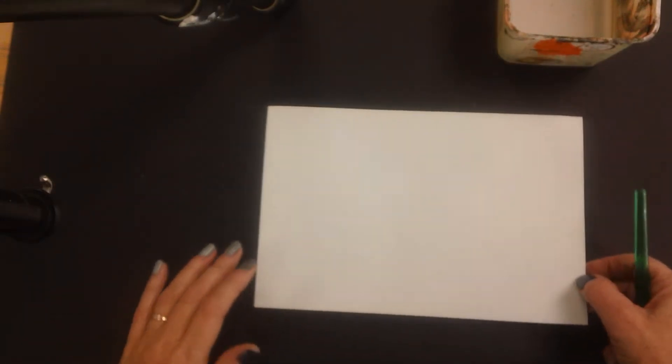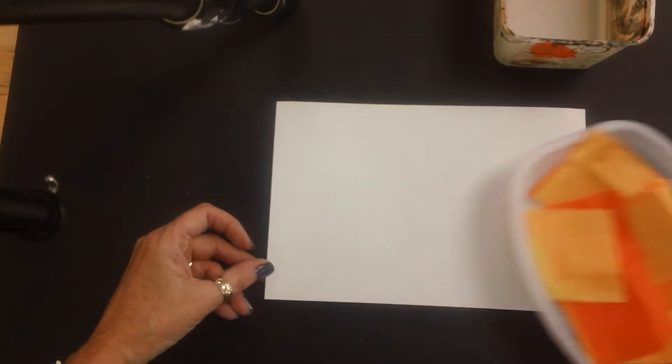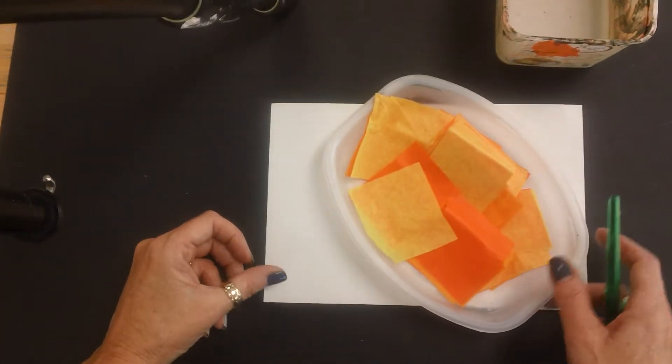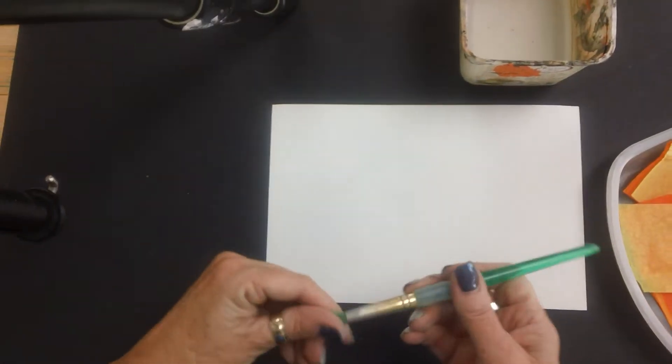Hello. We are going to be painting today with tissue paper. I've cut up some oranges and yellows for you to use. You're going to have a tub of water and a paintbrush.